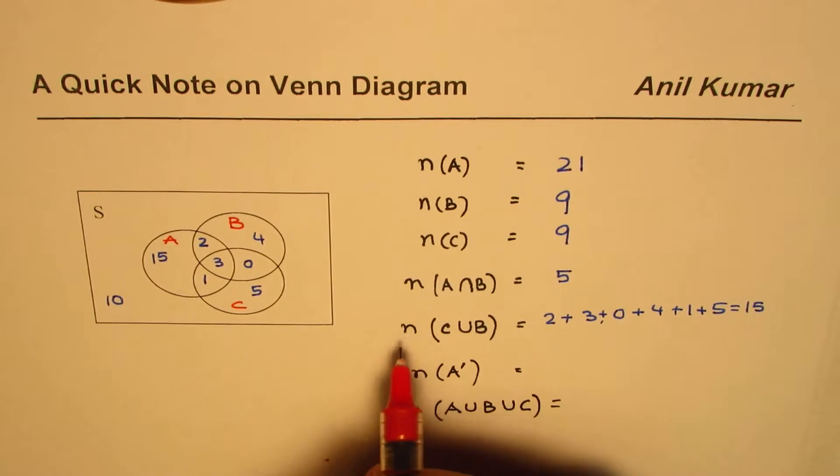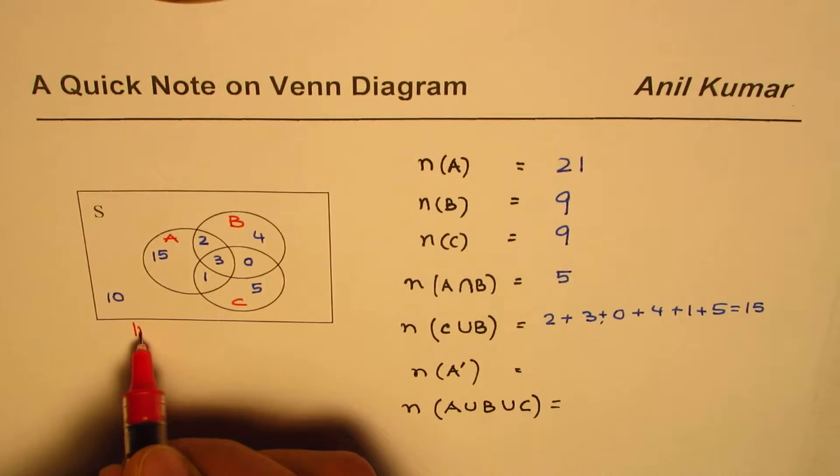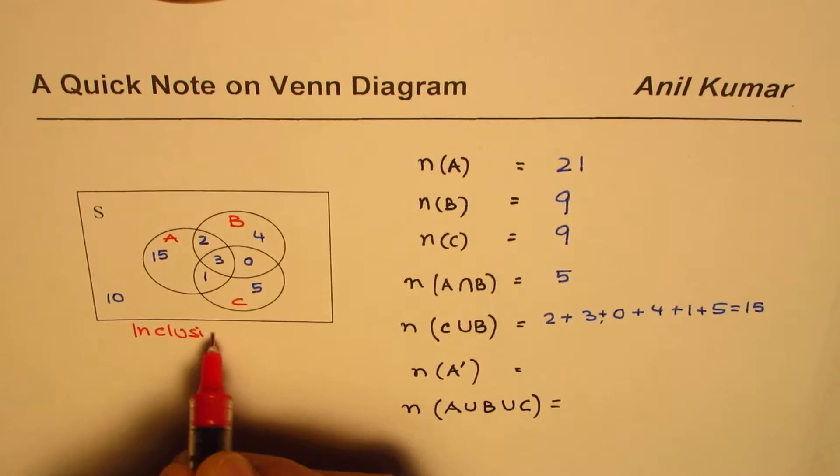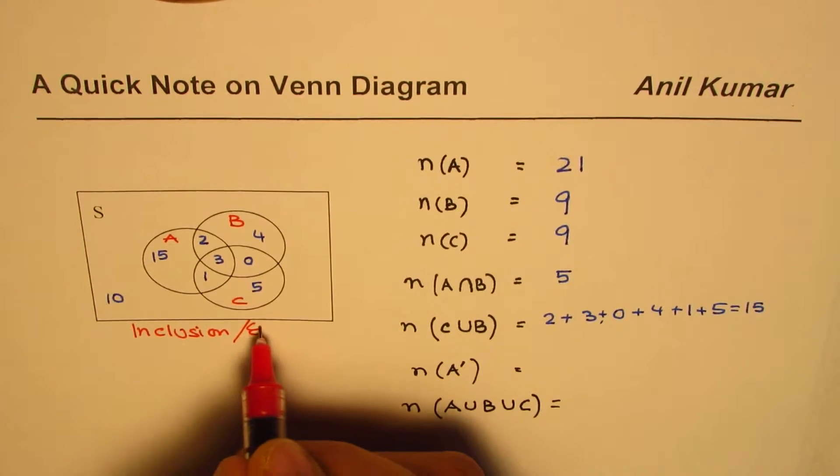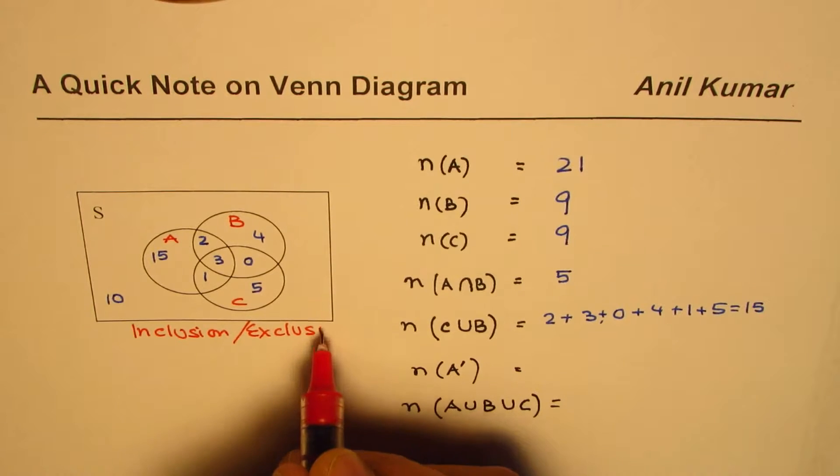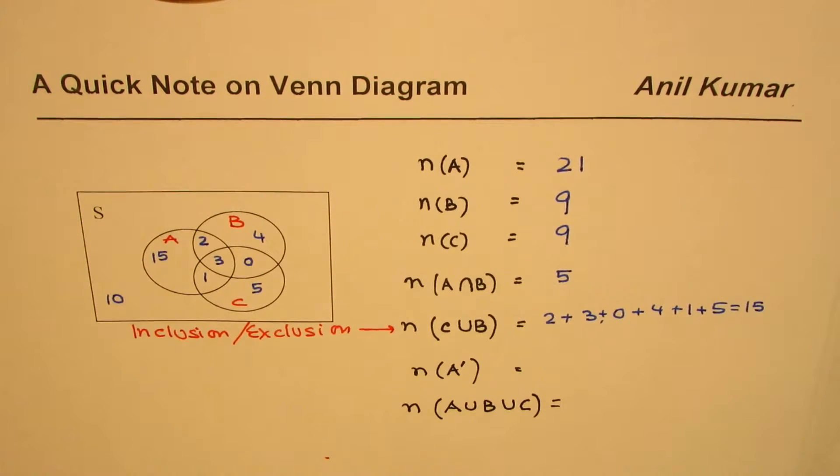So whenever we do intersection, we have to remember inclusion and then exclusion. So remember that part.